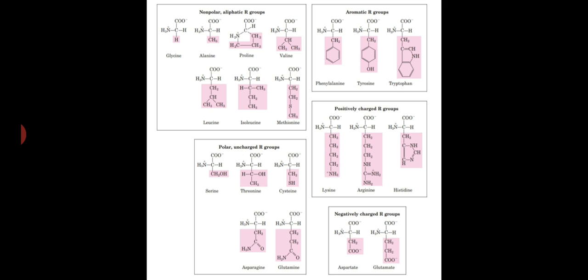First, the nonpolar aliphatic R groups. R groups in this class of amino acids are nonpolar and hydrophobic, and so they tend to cluster together within the proteins, stabilizing the protein structure by means of hydrophobic interactions.